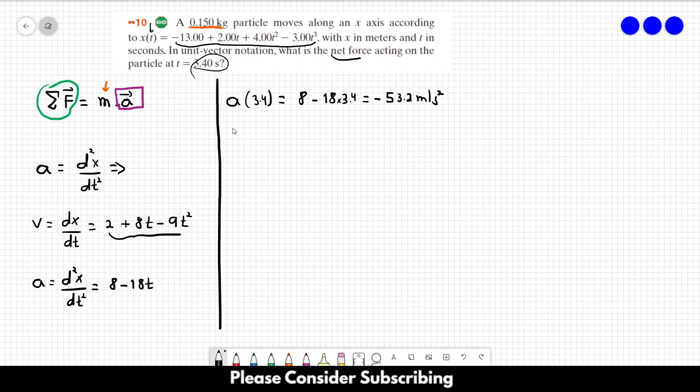The net force acting on the particle equals the mass, 0.15, times -53.2, which gives us -7.98 newtons.